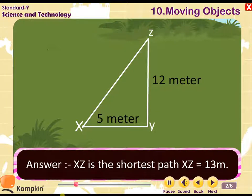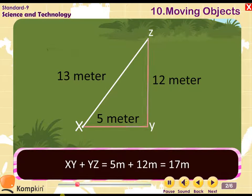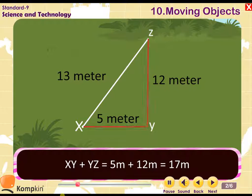xz is the shortest path. xz is equal to 13 meters. xy plus yz is equal to 5 meters plus 12 meters is equal to 17 meters.